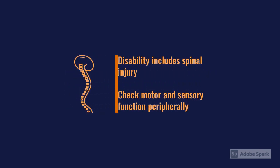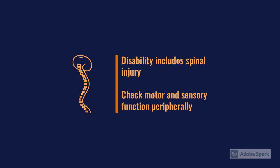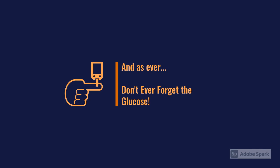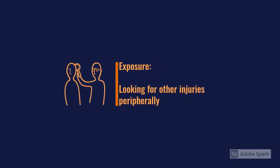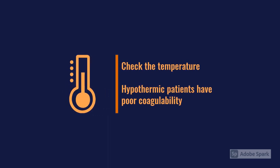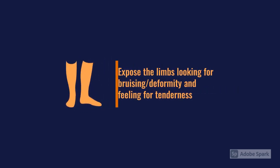The other aspect of disability is C-spine and general spinal injury. Can they move their legs and feet? Can they feel you touching both feet equally? Same with the hands — any evidence of spinal cord injury? If so, immobilize them; log rolling isn't necessary — just get imaging done. Also always check the blood glucose — don't forget the BM. Then we segue into Exposure and examination.